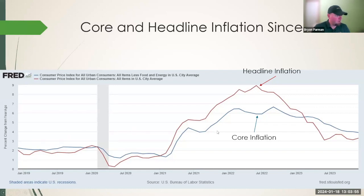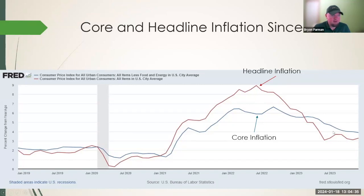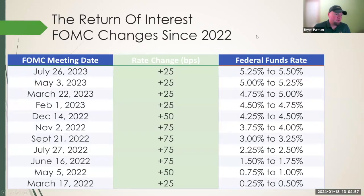The last report that came out was actually higher than expectations — economists had projected it to be flat or possibly down, but headline inflation actually ticked up. Overall, things have leveled off, but these inflation numbers have been stubborn to come down further. The Federal Reserve's target for inflation is around 2%, which is right around where it was from January 2019 through January 2020.